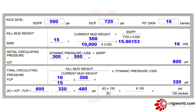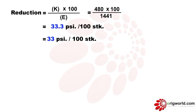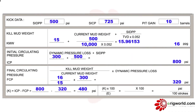Using K, I can calculate the pressure reduction per 100 strokes as 33.3. The rounding rule here is: whenever writing down the reduction for any number of strokes, always round down to a complete number and neglect decimal points. This is how we calculate the kill sheet.